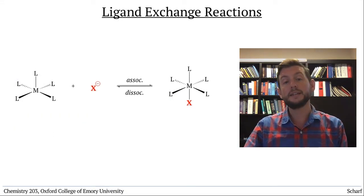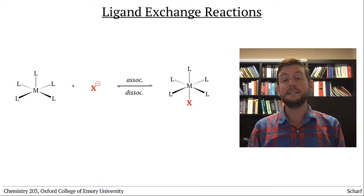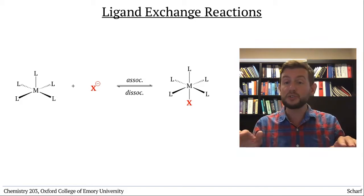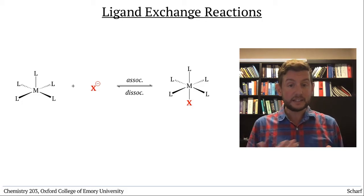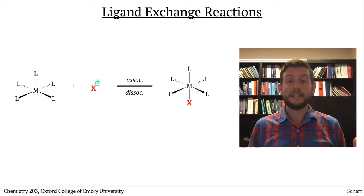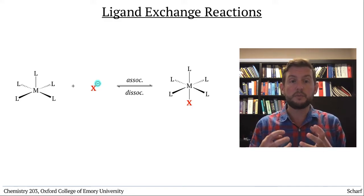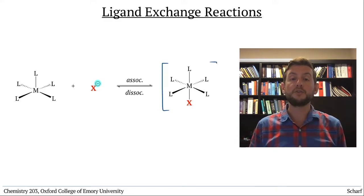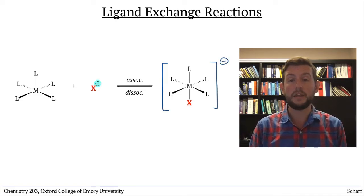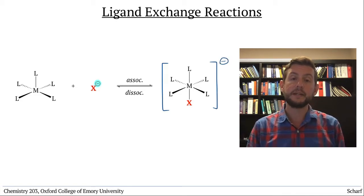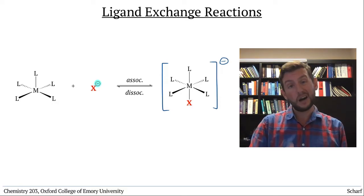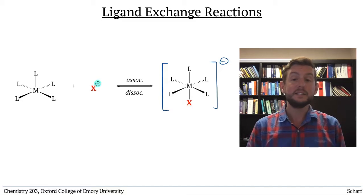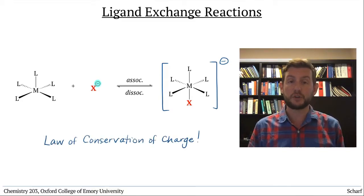It's important to note that ligand association and dissociation don't change the oxidation state of the metal. So, if an X-type ligand, which is by definition associated with a negative charge, associates to a metal, then the overall charge of the complex must go down by one. And if an X-type ligand dissociates, then the overall charge must go up by one. This is really just a statement of the law of conservation of charge.